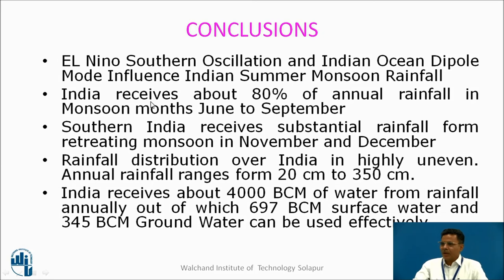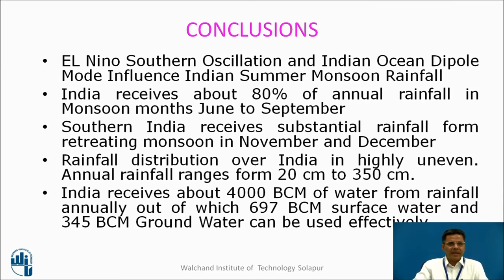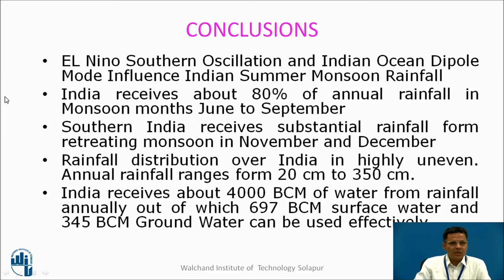Conclusions: El Niño–Southern Oscillation and Indian Ocean Dipole Mode influence Indian Summer Monsoon Rainfall. India receives about 80% of annual rainfall in monsoon months of June to September. Southern India receives substantial rainfall from the retreating monsoon in November and December. Rainfall distribution over India is highly uneven, ranging from 20 to 50 centimeters in some areas. India receives about 4,000 billion cubic meters of water annually, out of which 697 billion cubic meters of surface water and 345 billion cubic meters of groundwater can be used effectively.